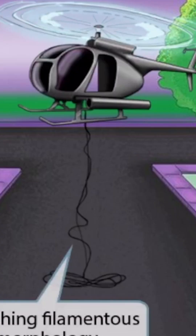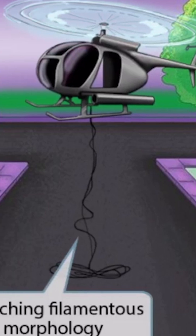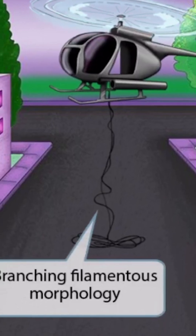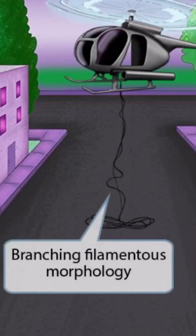An agency has fortunately gotten word about these mischievous terrorists, and now a helicopter has come to the scene to put an end to this nonsense. Notice that some tangled-up cords have been dropped from the helicopter. The tangled-up cords are a symbol for the branching filamentous morphology of Nocardia, because the tangled-up cords look similar to the organism when viewed under a microscope.